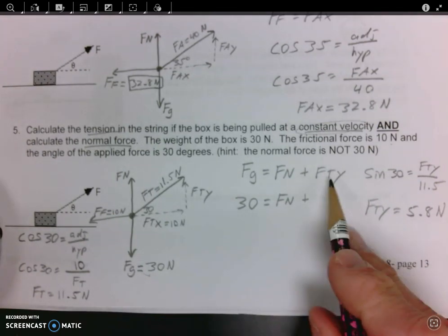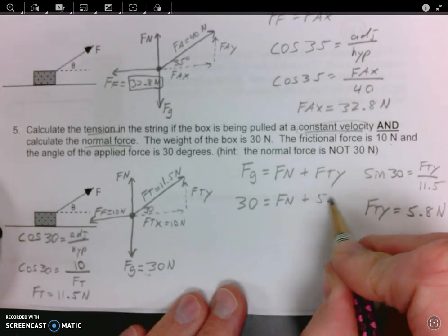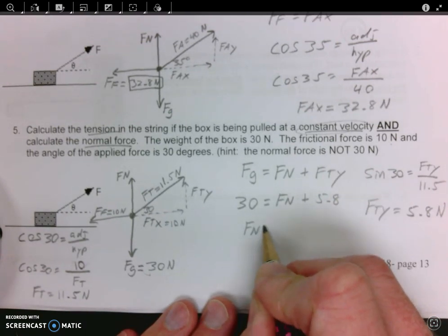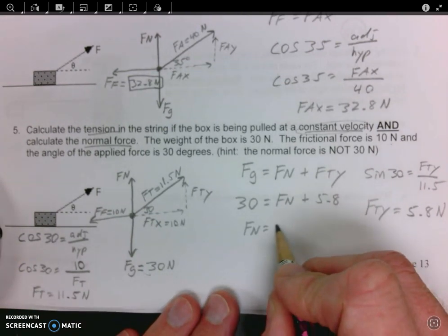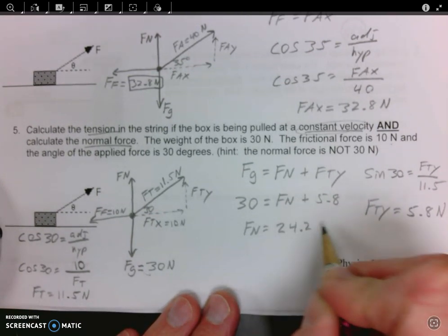So if Fty is 5.8, then we know that the normal force is 30 minus 5.8, which is 24.2 newtons.